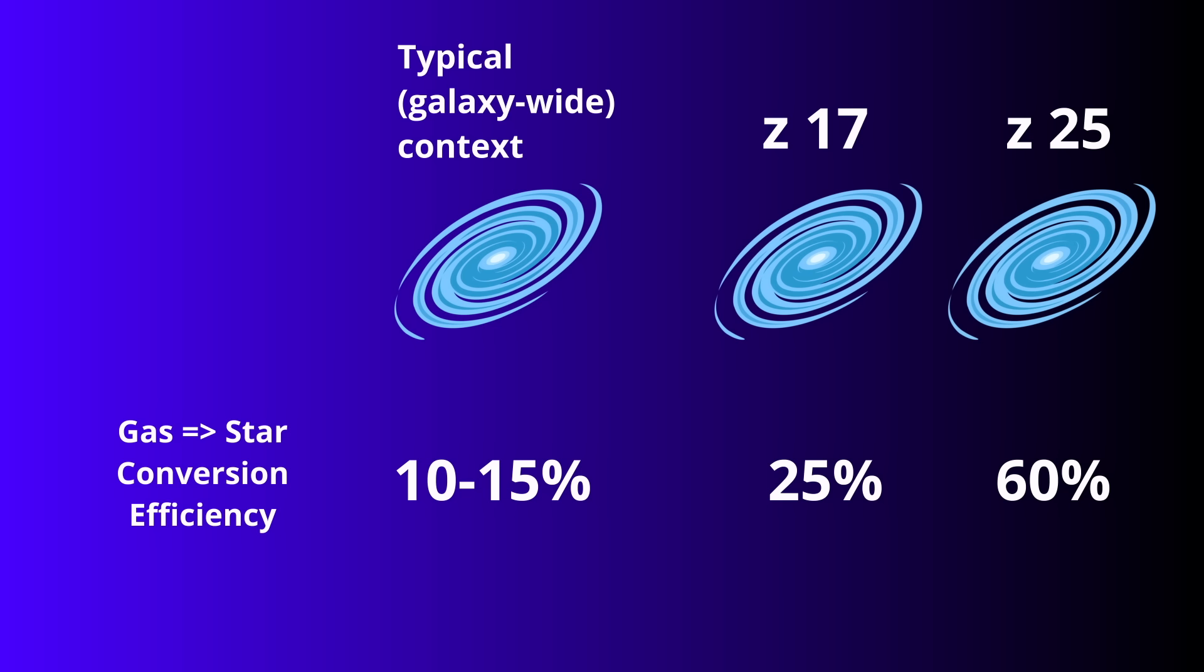Think about what that means. 60% of all the gas in a young galaxy would have to collapse into stars almost instantly. Real galaxies don't do this. Feedback from the first supernovae should blow gas out. Cooling and fragmenting takes time. The physics of star formation simply doesn't allow it. To make these numbers work, you'd need some extraordinary intervention to redistribute gas and keep the starburst going. Without that, the efficiency figure is absurd.